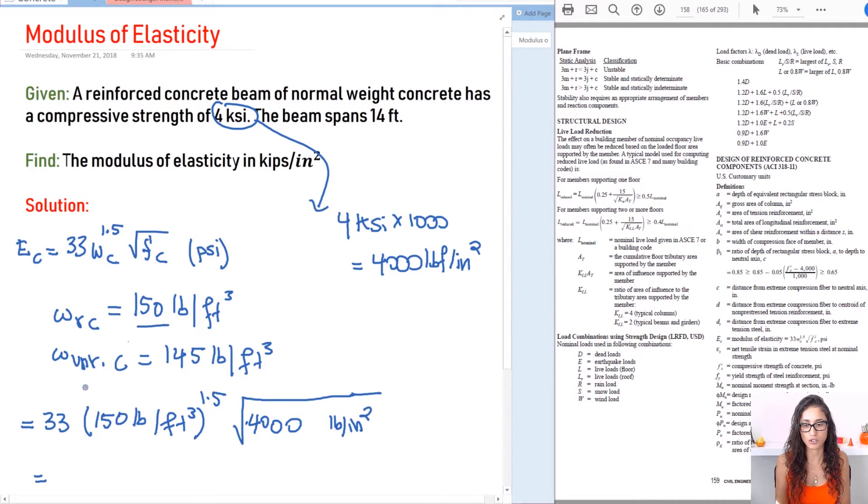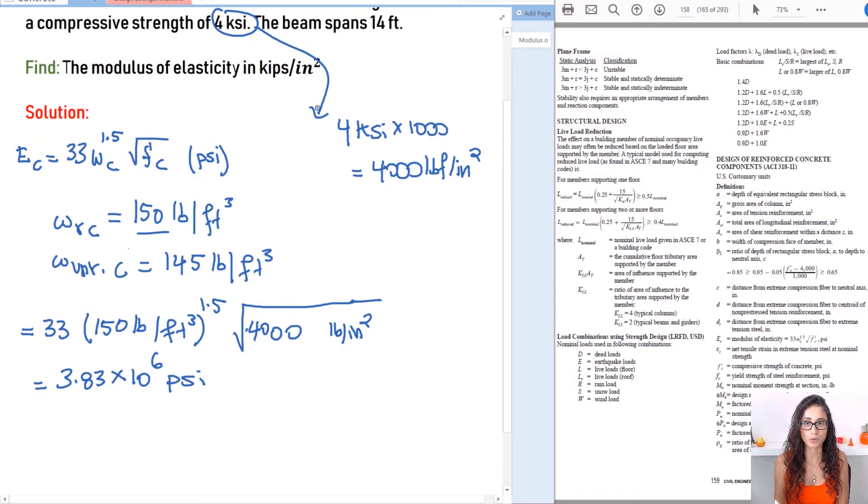If you plug this into your calculator you get an answer of 3.83 times 10 to the power of 6 in PSI, because if you plug in these values using the right units it should give you PSI. Now we were asked to give an answer in kips per inch squared, so all we need to do is divide this by a thousand and that gives you an answer of 3,834 kips per inch squared or ksi—they're the same thing. That is your answer.